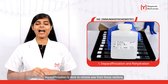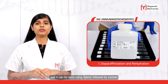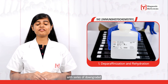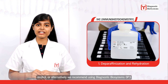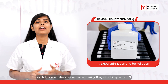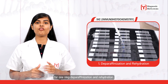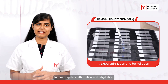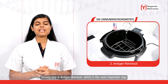The first step of IHC is deparaffinization and dehydration. Deparaffinization is done to remove wax from tissue sections and can be done using xylene followed by washes with a series of downgraded alcohol. Alternatively, we recommend using Diagnostic Biosystems TP3 for one-step deparaffinization and dehydration.